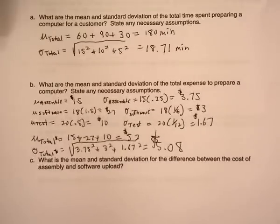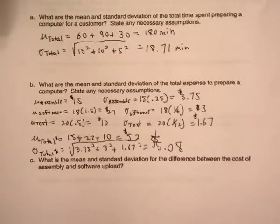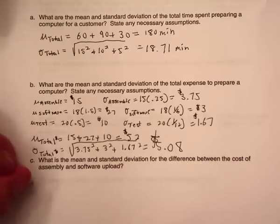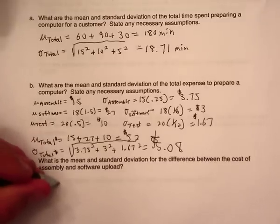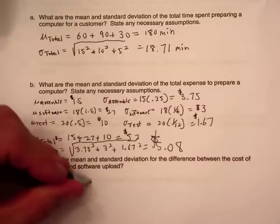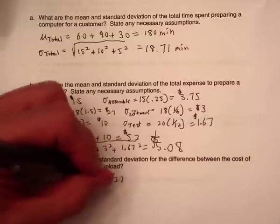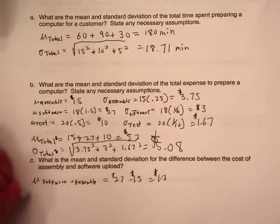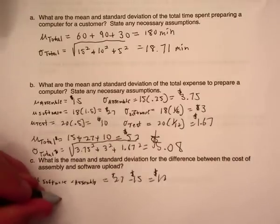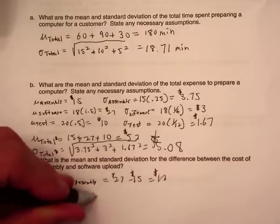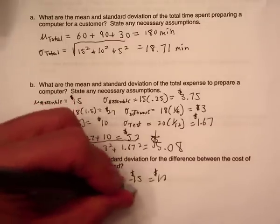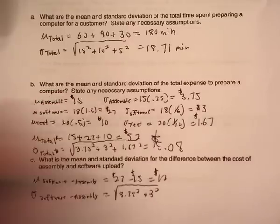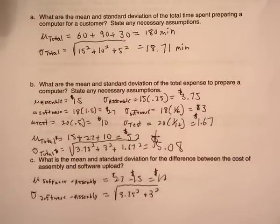Part C: what is the mean and standard deviation for the difference in cost between assembly and software? The mean difference between software and assembly is $27 − $15 = $12, so on average software costs $12 more. For the standard deviation of the difference, we add the variances: 3.75² + 3², then take the square root, giving $4.80.